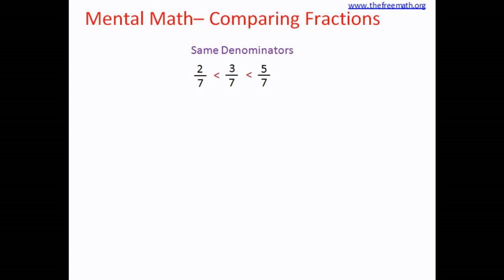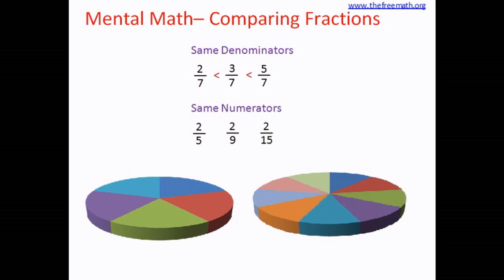But what happens when the denominators are different and the numerators are the same? Let's look at this example: 2 over 5, 2 over 9, and 2 over 15. Suppose we have a pizza — if we make 5 equal parts and eat 2, or if we make 9 equal parts and eat 2, which is more? When you make 5 parts, the parts are bigger than when you make 9 parts. That means you eat more pizza when you eat 2 parts out of 5.